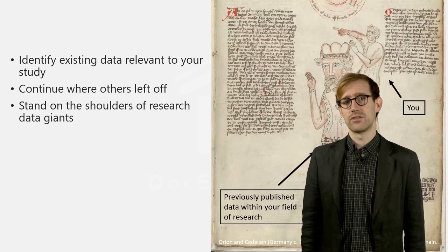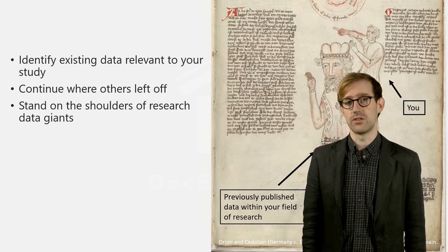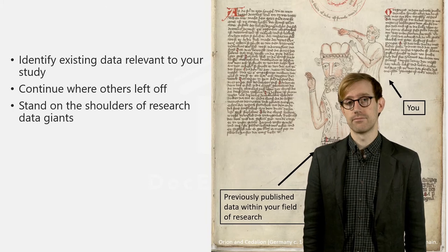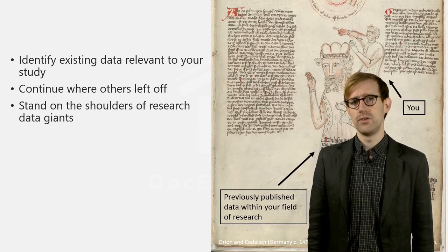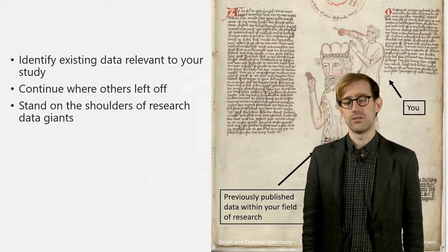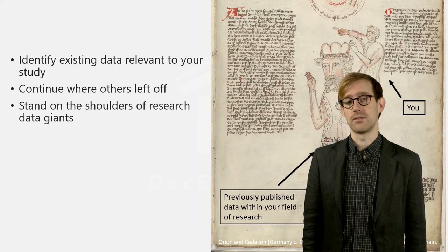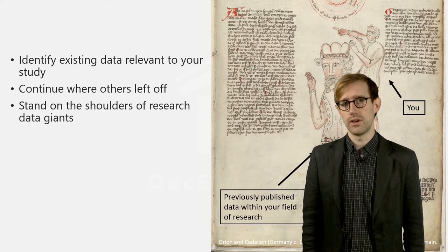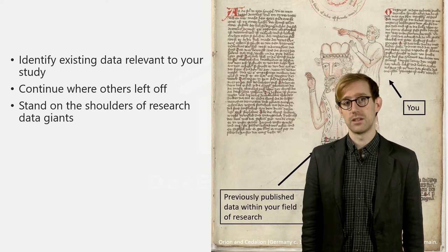Depending on your area of research, locating and reviewing the available data at an early stage of the research process may be just as important as the literary review. Reviewing the available research data is closely interlinked with the initial phase of the research project — the formulation of research questions and the shaping of the study. Looking into the available data within your field, preferably before you start your own data collection, may save you a lot of time.